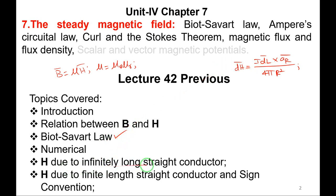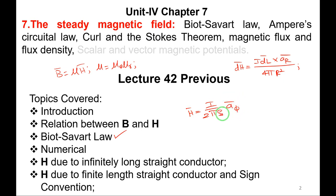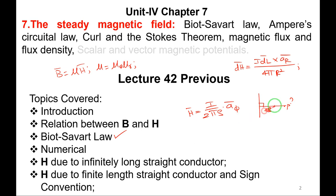Next, H due to an infinitely long straight conductor. If the conductor is straight and infinite, the formula is H = I/(2πρ) · aφ. Here aφ indicates the direction of rotation of the magnetic flux lines, and ρ is the perpendicular distance from the conductor to the field point. We should be very careful in calculating ρ.